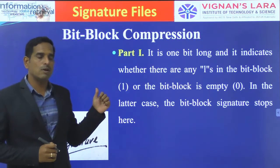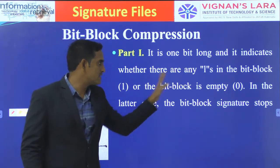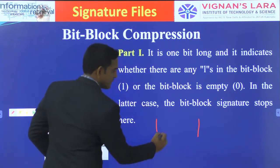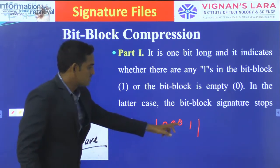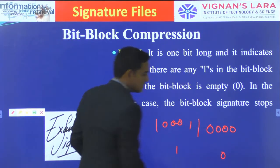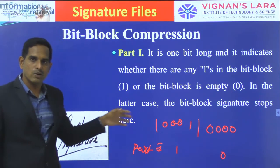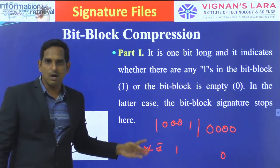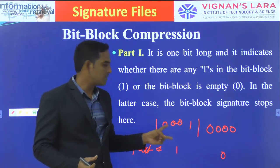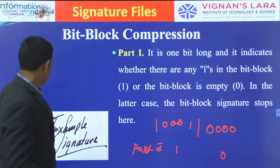Bit block compression is performed in three parts. Part 1 is one bit long and indicates whether there are any ones in the bit block — whether the bit block is empty or not. If the bit block contains any ones, Part 1 is set to 1; if the bit block has no ones, Part 1 is set to 0.